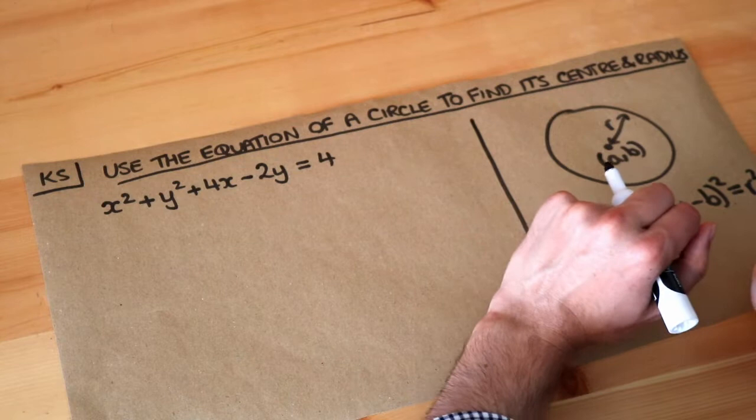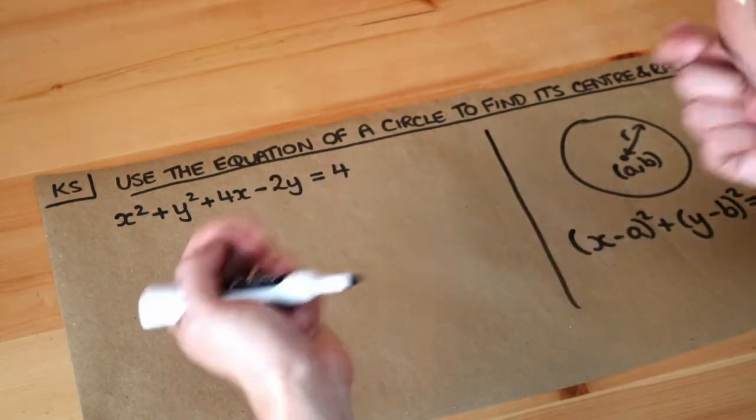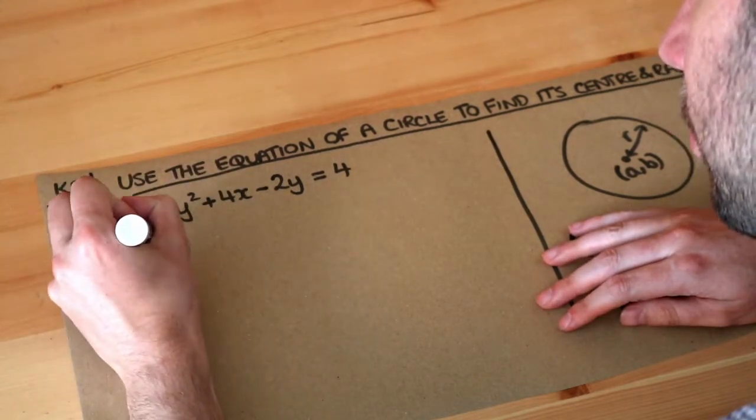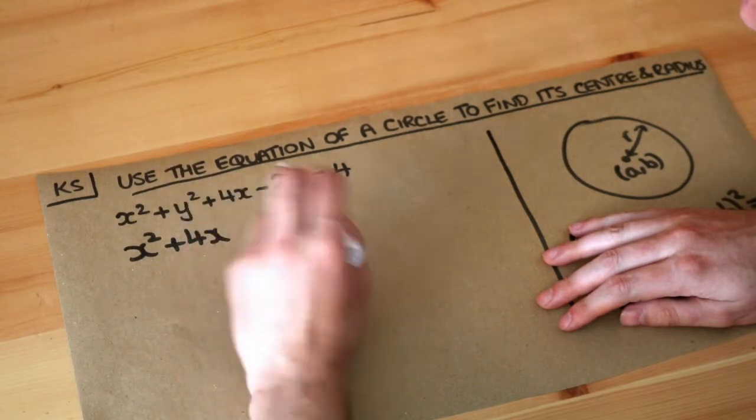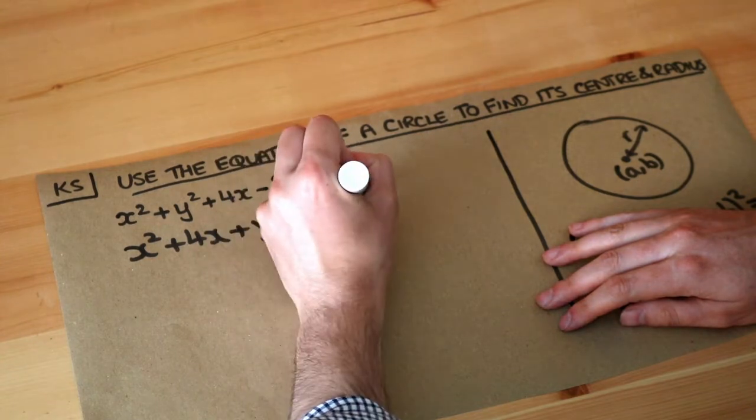Now the strategy is to use completing the square. So let's first put these terms in order which will make it easier to complete the square. So we want all the x terms together first, so reorder the terms x squared plus 4x. Then we want the y squared, then we want the y terms, so we've got plus y squared minus 2y, and we'll leave that 4 alone for the moment.